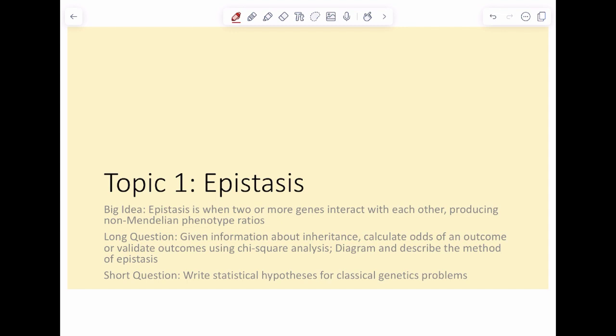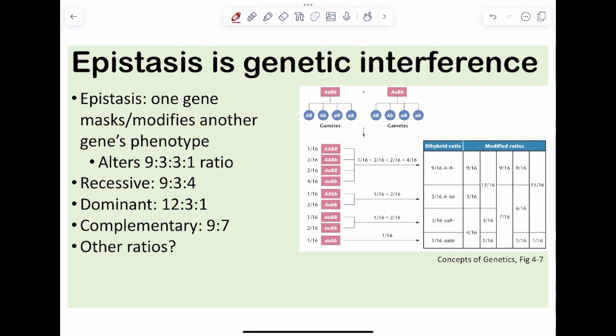We're going to talk epistasis today. So the big idea is you can have two genes and they're going to interact with each other. Meaning one gene is going to manipulate the phenotype of the other gene. We have genes manipulating other phenotypes. It is a form of genetic interference. Again, epistasis is one gene masking or modifying another phenotype. The way that we hunt this down or smell it out is we need to hunt for a deviation from the dihybrid cross 9-3-3-1 for the phenotype ratio.